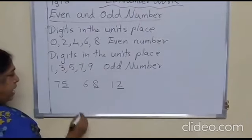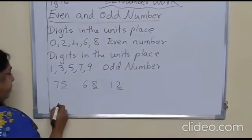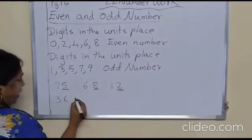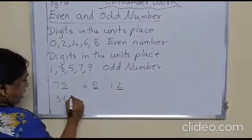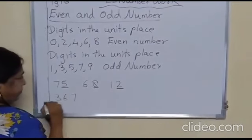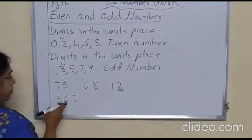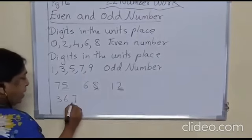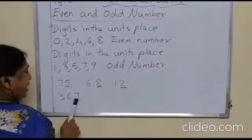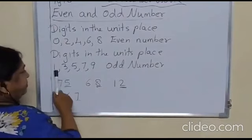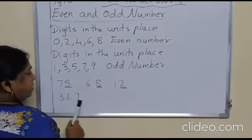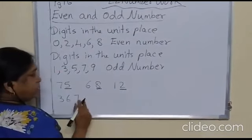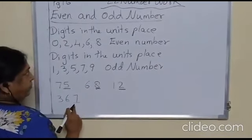So, understood how to see? Let there be any number. Suppose the number is 367. We are not going to look at all the digits — we are going to see only the digit in the units place. Here we have 7, so this is an odd number.